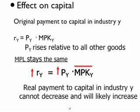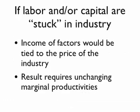We can now summarize the effects on labor and capital if the price of a good goes up and capital and labor are fixed in the industry. The incomes of both factors will be tied to the price of the good — if the price goes up, both labor and capital benefit. However, this result does require unchanging marginal productivities, which in our example comes from a fixed amount of capital and labor. If labor and capital can move, this analysis must be adjusted.